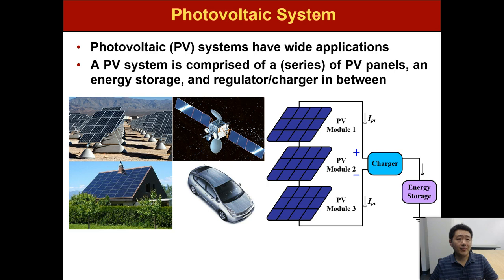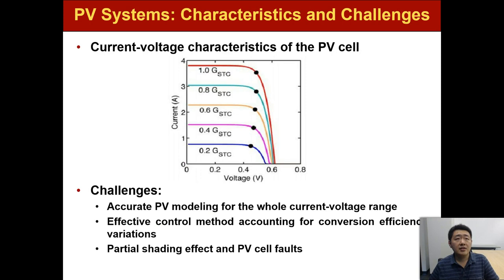Photovoltaic systems have many wide applications as standalone systems for satellite uses and for solar electric vehicles. A PV system is comprised of a series of PV panels, an energy storage system, and regulators or chargers connected in between. This is shown in the right figure.